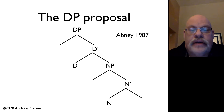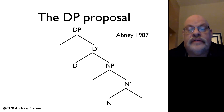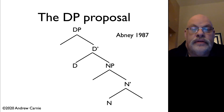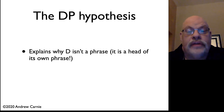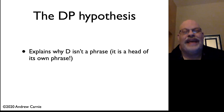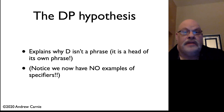One thing that's very important here is notice that the DP does not sit in the specifier of the noun phrase, and we have a reason for that. We're going to come back to that a little bit later because we're going to reserve that position for something else. Instead, the noun phrase is the complement to the determiner, and the determiner projects up in X-bar theory to a DP. This explains a number of things. First of all, it explains why the determiner isn't a phrase — it's because it's the head of its own phrase. That's why, in most cases, you only have one. Second thing we notice is we now have no examples of specifiers. We have to come back and fix that problem.